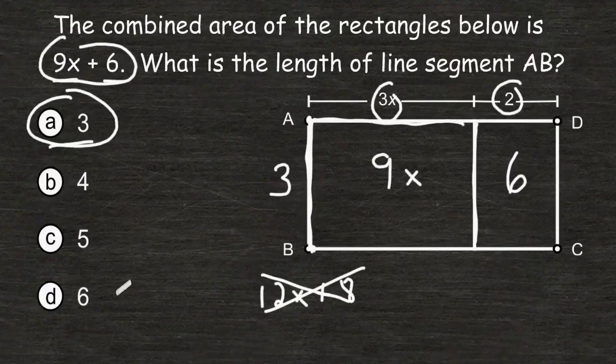And the same thing would be true if we were to test out 5 and 6. So the measure of line segment AB must be equal to 3.